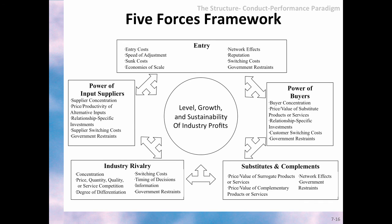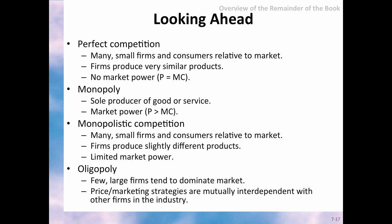In summary, the structure-conduct-performance paradigm — you can see what this means in your textbook — holds that the level, growth, and sustainability of industry profits depends on five large factors: barriers to entry, the market power of buyers and suppliers of inputs, the level of competition and rivalry within the industry, and the number of complement and substitute goods and services available in the market. In the next few chapters, we will discuss in more detail four major market structures: perfect competition, monopoly, monopolistic competition, and oligopoly. So stay tuned. This concludes the chapter seven lecture. Until the next chapter. Bye.